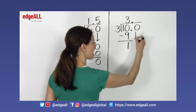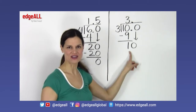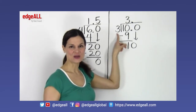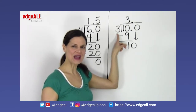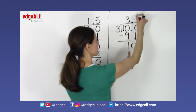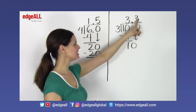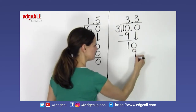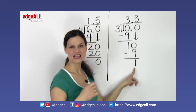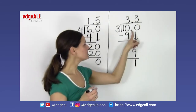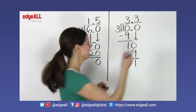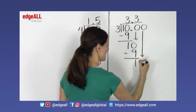I bring the 0 down to join my remainder from the previous calculation, giving me 10 divided by 3 again. What's the largest whole number I can multiply by 3 to get a product less than or equal to 10? Again, the answer is 3. I calculate 3 times 3 equals 9, place my 9 here, and 10 minus 9 equals 1. I'm still not finished because I have a remainder. We can add as many 0's as we want after the decimal point, so I add another 0 and bring it down to join this 1, giving me 10 again.